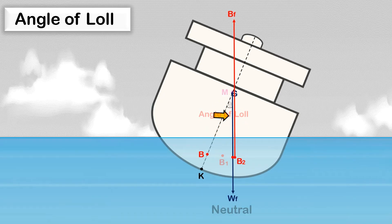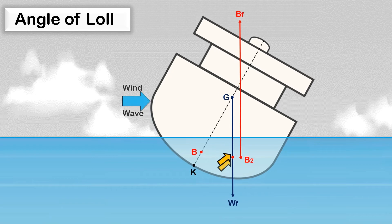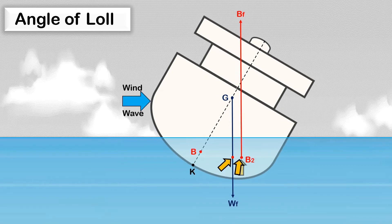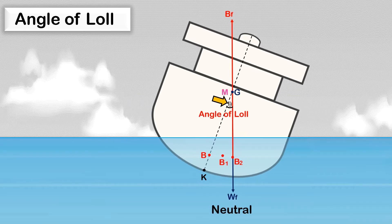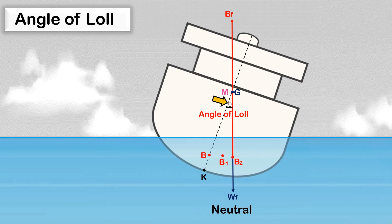If the ship is heeled further beyond the angle of loll by some external forces, the center of buoyancy moves further to the low side, creating a righting lever and righting moment that will bring the ship back to the angle of loll. If no external forces exist, she will come to rest at the angle of loll — not in an upright condition. In this condition, the ship will oscillate about the angle of loll.